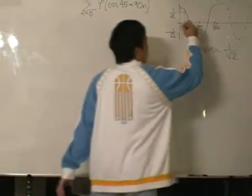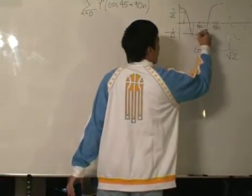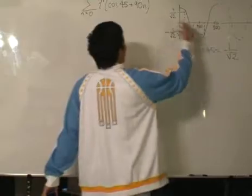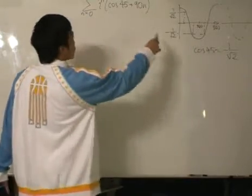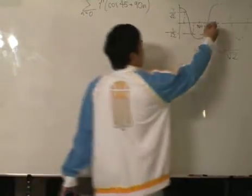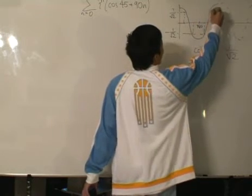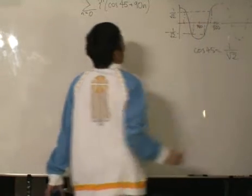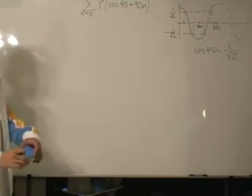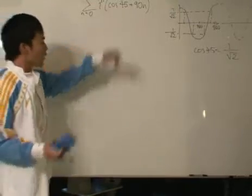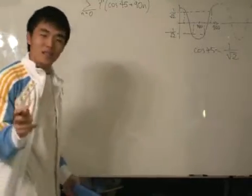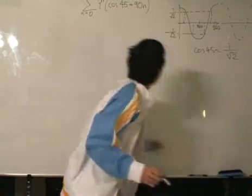Then later, we add another 90, so we will move all the way over here, which is the same again, 1 over root 2. And we add another 90, which is the angle 315, which is over here. It will be 1 over root 2. So by looking at it, this term repeats itself, this term repeats itself. Maybe this problem isn't so difficult after all.